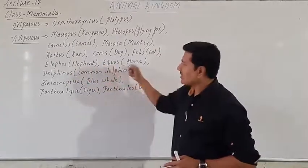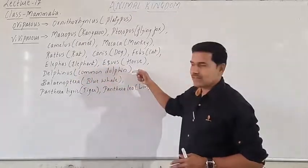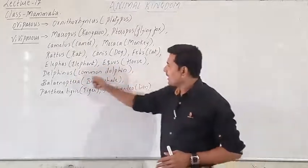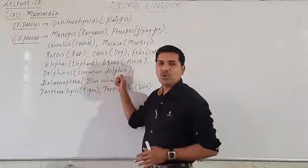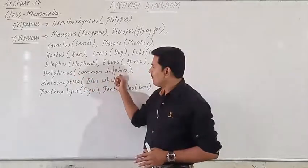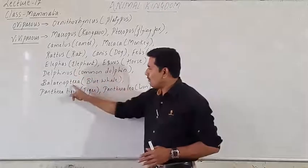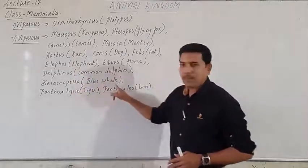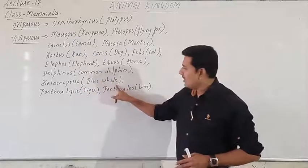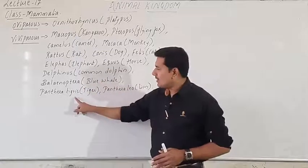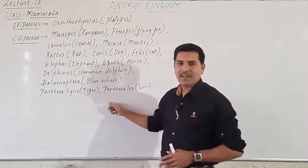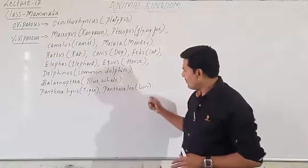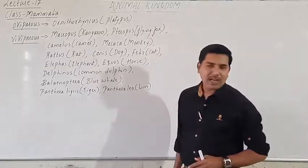Delphinus is the common dolphin. Balaenoptera is the blue whale. Panthera tigris is tiger. Panthera leo is lion. These are the scientific names and common names of key mammalian examples you need to remember.